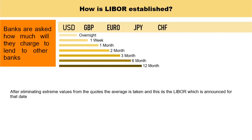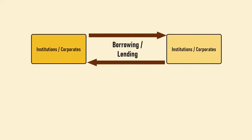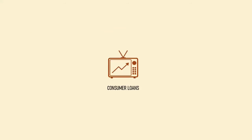Once this has been calculated, it is published at around 11:55 am London time. LIBOR is used as the basis for borrowing or lending amongst institutions and corporates. In addition, it is also used as a basis for consumer loans, so it impacts consumers just as much as it impacts financial institutions and corporates.